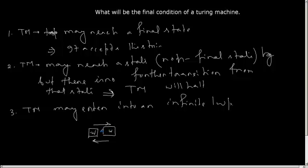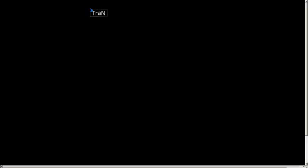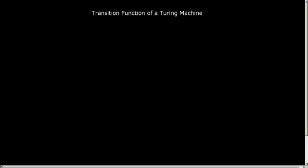So these are the three possibilities for a Turing machine. Now let us come to another concept: the transition function for a Turing machine. What will be the mathematical representation of a transition function? Let us look at how the transition function of a Turing machine will look.